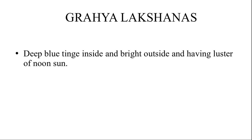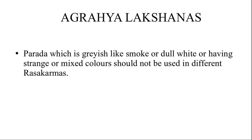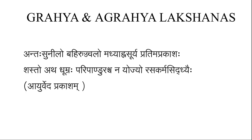Now let's consider the grahi lakshanas of mercury — that is characteristics of good mercury. An ideal ore of mercury or native mercury will appear with a deep blue tinge inside and bright outside, having the luster of the noon sun: antasu nilo bahiru jvalo madhyana sodya pradima prakasha shastaha. Then agrahi lakshanas — mercury that is greyish like smoke, or dull white, or having strange or mixed colors should not be used in different Rasa karmas.